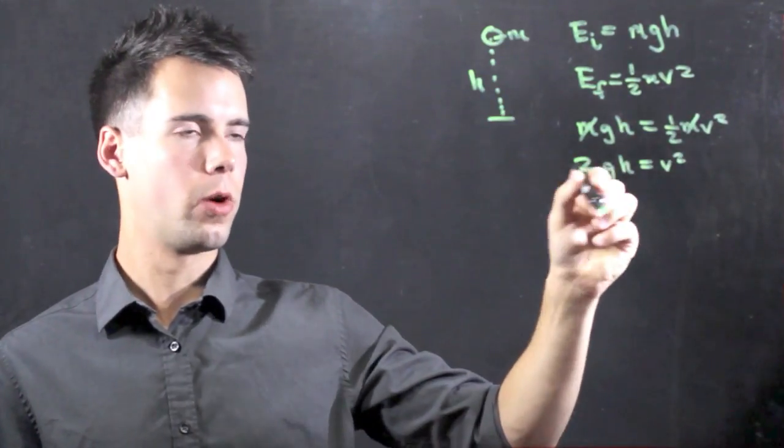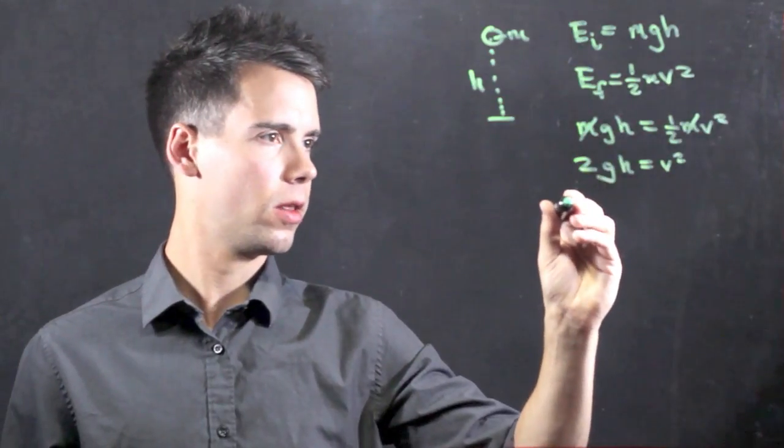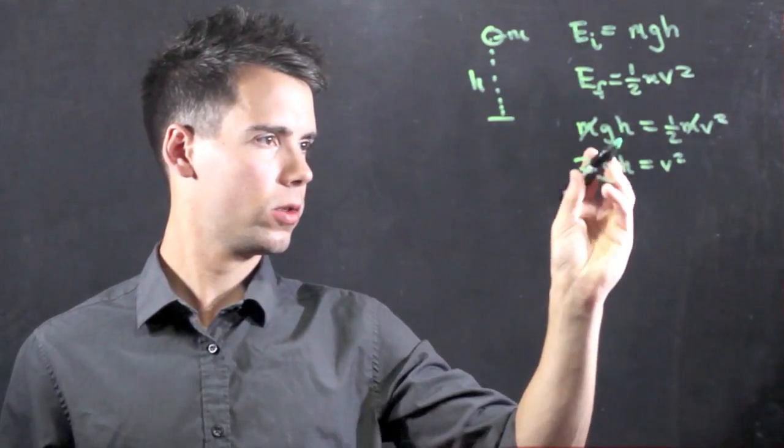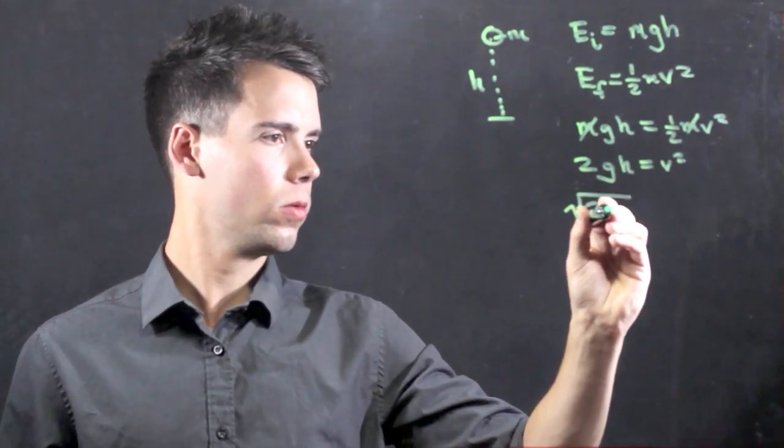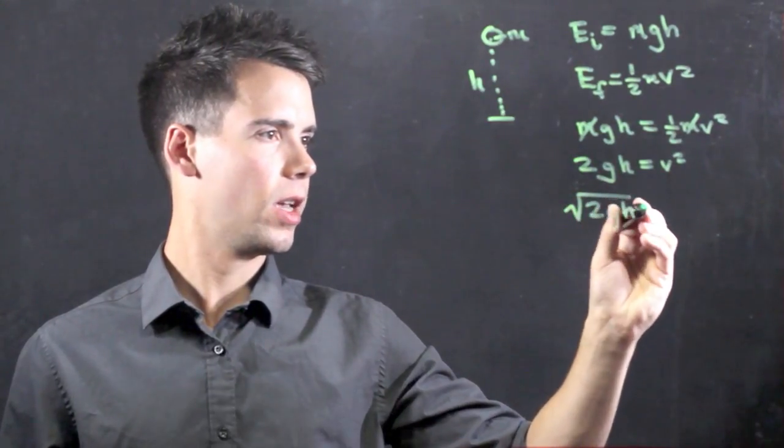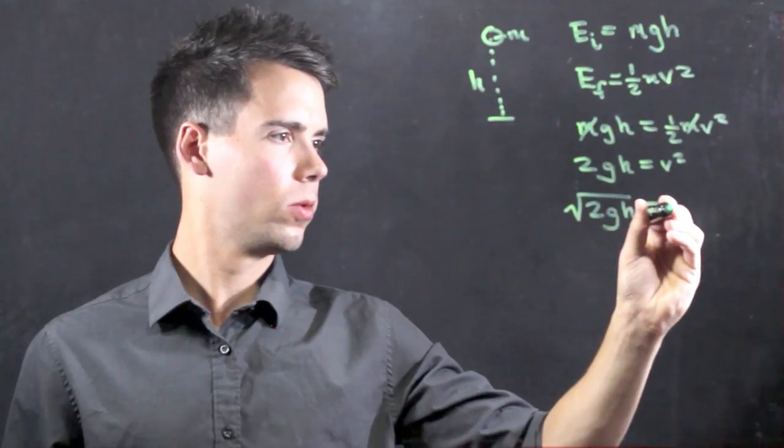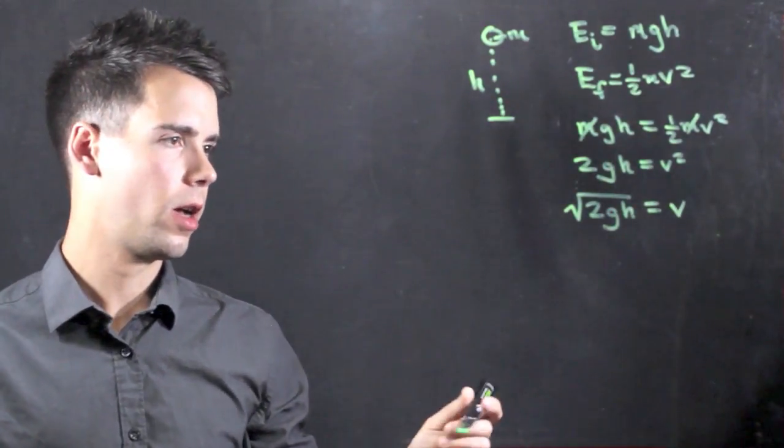Now, we can square root both sides, and we find that the square root of 2gh is equal to the velocity.